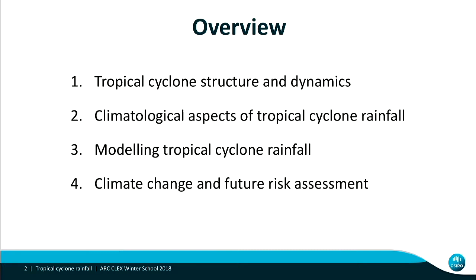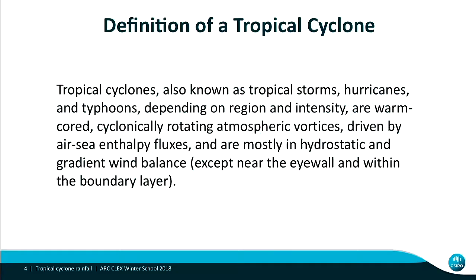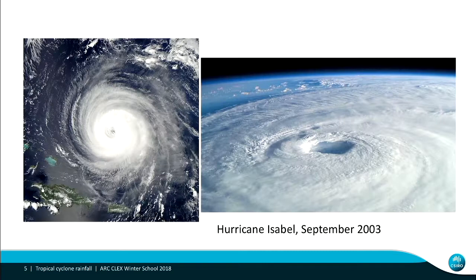Those slides are largely from Kerry Emanuel in the States, who's been working on that problem. So what is a tropical cyclone? Tropical cyclones, also known as tropical storms, hurricanes, and typhoons — the name depends on the region and intensity. They are warm-core, cyclonically rotating atmospheric vortices driven largely by air-sea enthalpy fluxes — heat acquired through latent heat flux from the sea surface — and are mostly in hydrostatic and gradient wind balance, except near the eye wall where you have very strong vertical motions, and within the boundary layer where winds can become supergradient.